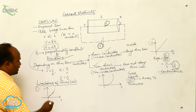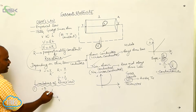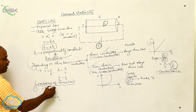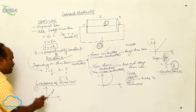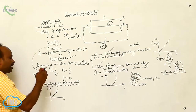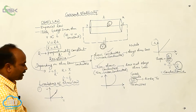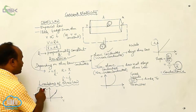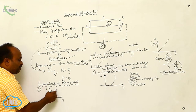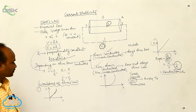Beyond a certain voltage limit, as you increase the voltage, there is a violation of the straight line — the graph becomes curved. So at lower voltages, Ohm's law is valid, but at higher voltages, Ohm's law is violated and the graph curves.